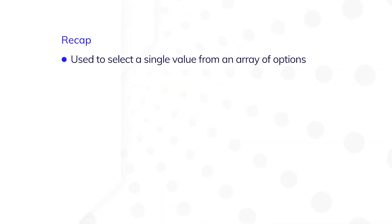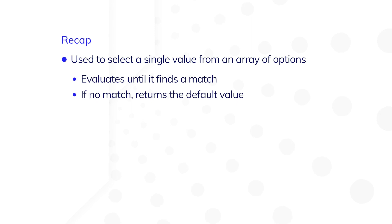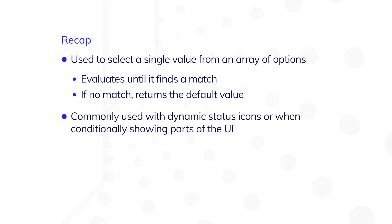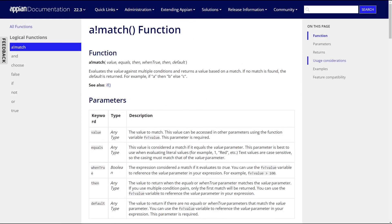Let's recap what we've learned so far. The match function is used to select a single value from an array of options. It will evaluate until it finds a match to the value parameter. If no match is found, the function will return the default value. You'll commonly use this function with dynamic status icons or when conditionally showing parts of the UI. Because of its clear syntax, the match function will make your expressions cleaner and easier to understand and maintain. To learn more about this function, check out the Appian documentation.